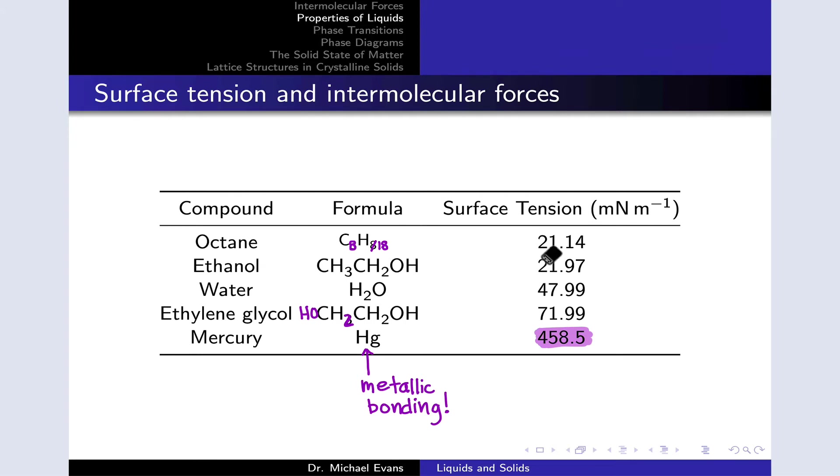We can see the connection to intermolecular forces here to some degree. So octane has quite low surface tension with very weak intermolecular forces—only London dispersion forces happening in a typical sample of octane. As we go up to stronger intermolecular forces, for example hydrogen bonding, we start to see higher surface tensions.